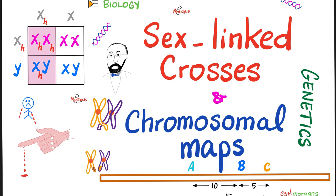We talked about how scientists discovered that DNA is the actual genetic material. We talked about mutation and changes in the gene pool. And in the last video, we talked about Punnett squares. Today, we will apply those Punnett squares to sex-linked crosses, and then we will turn our attention to the topic of chromosomal maps and centimorgans.